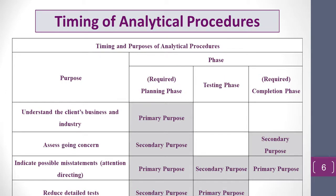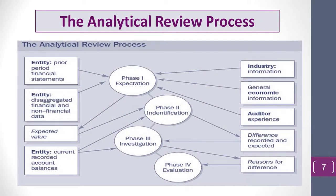Now let's discuss the analytical review process — the final part of today's lecture. When auditors perform analytical procedures, they go through four steps. Step one is Expectation, step two is Identification, step three is Investigation, and step four is Evaluation.